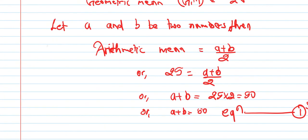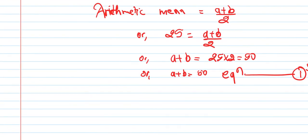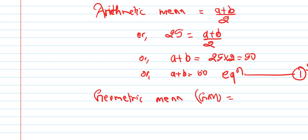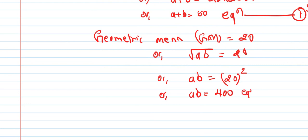We are given the geometric mean. The geometric mean of two numbers A and B uses the formula GM = √(AB). So GM = √(AB) = 20, therefore squaring both sides, AB = 400. This is equation 2.